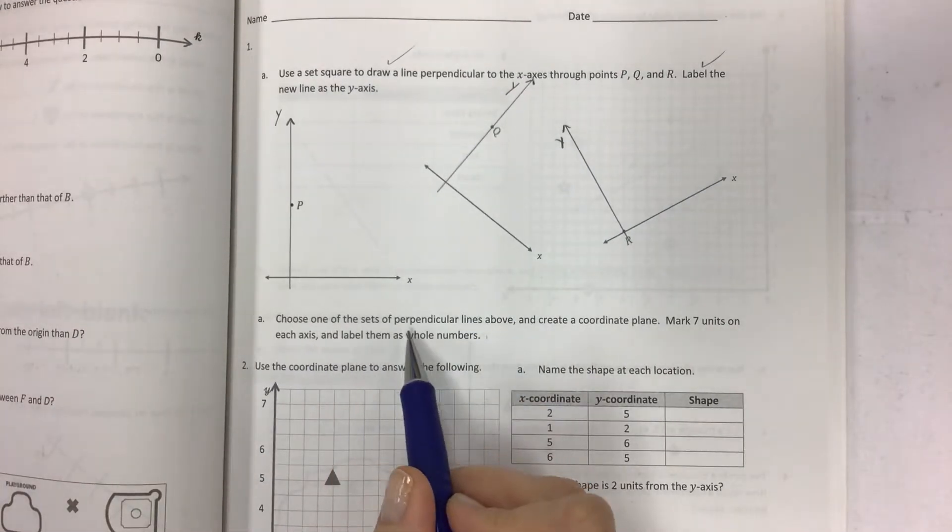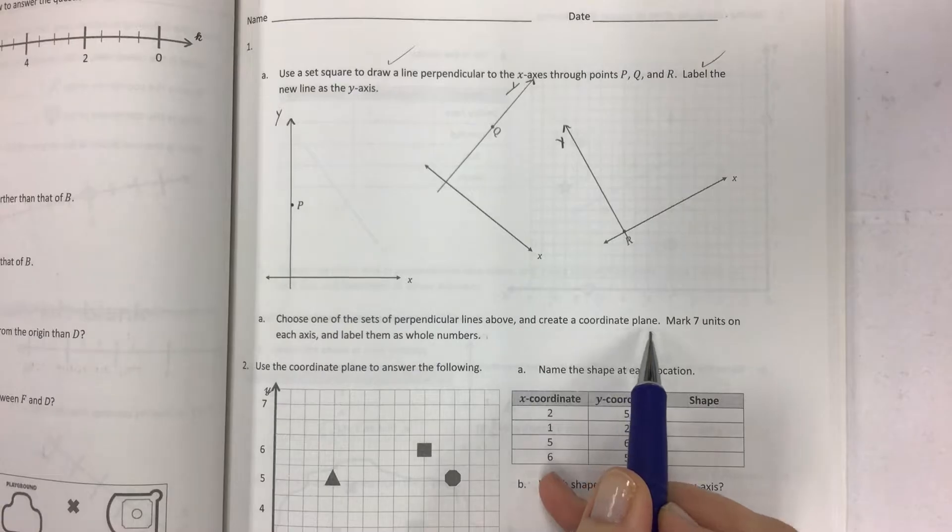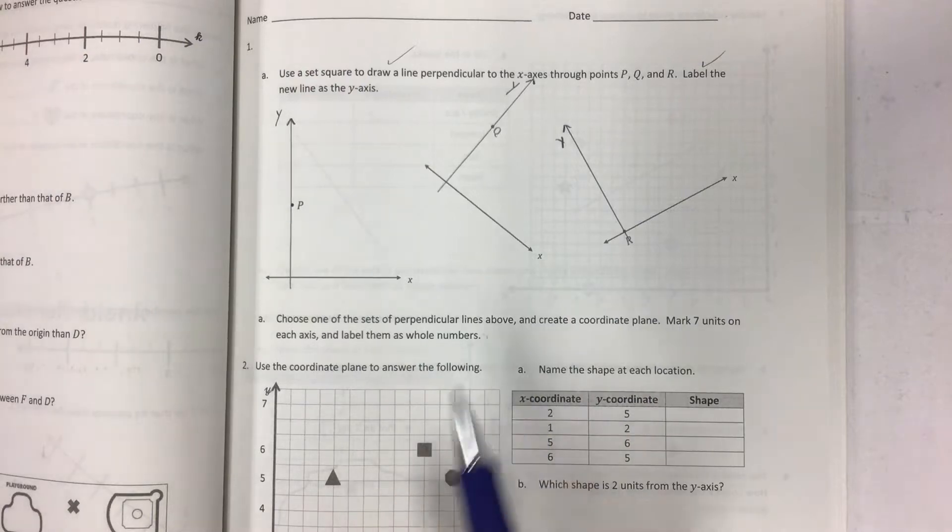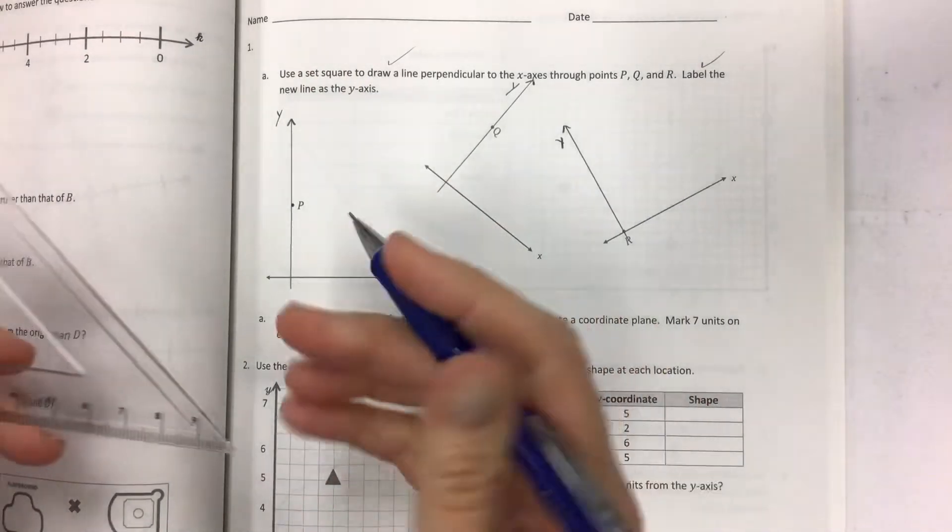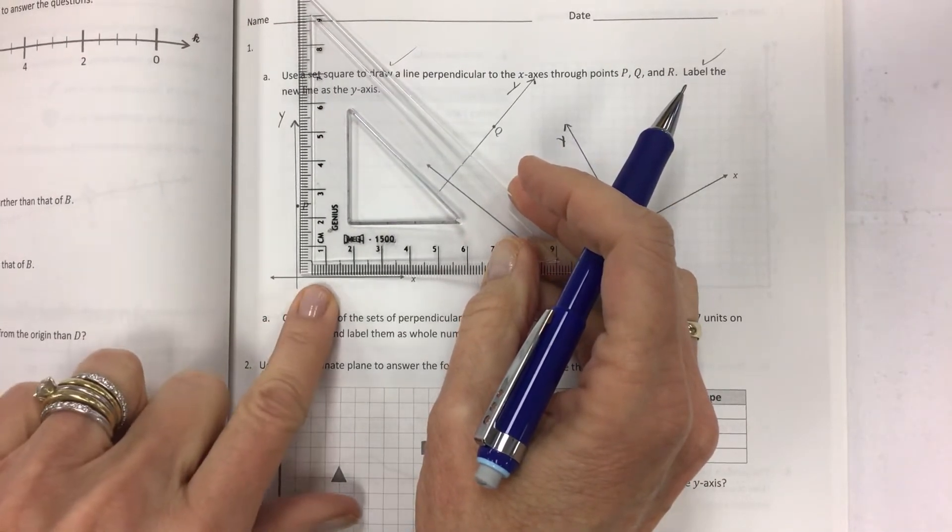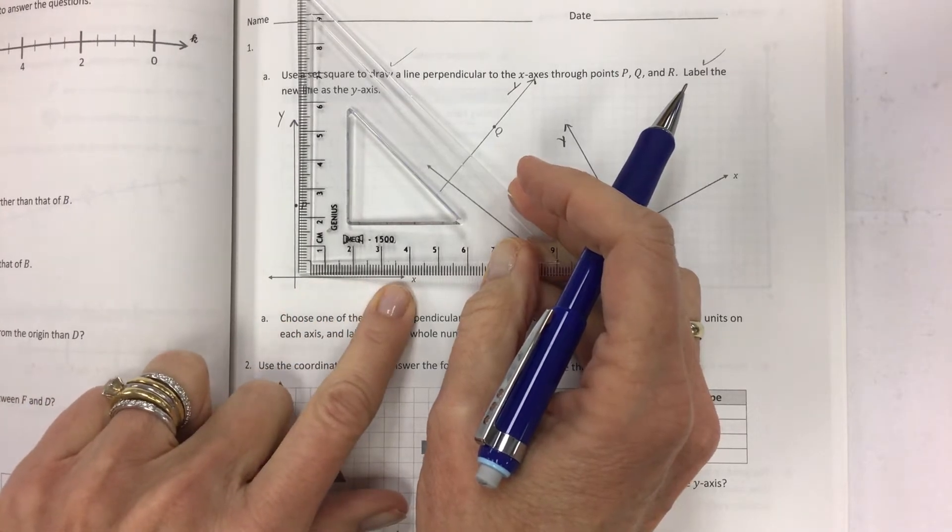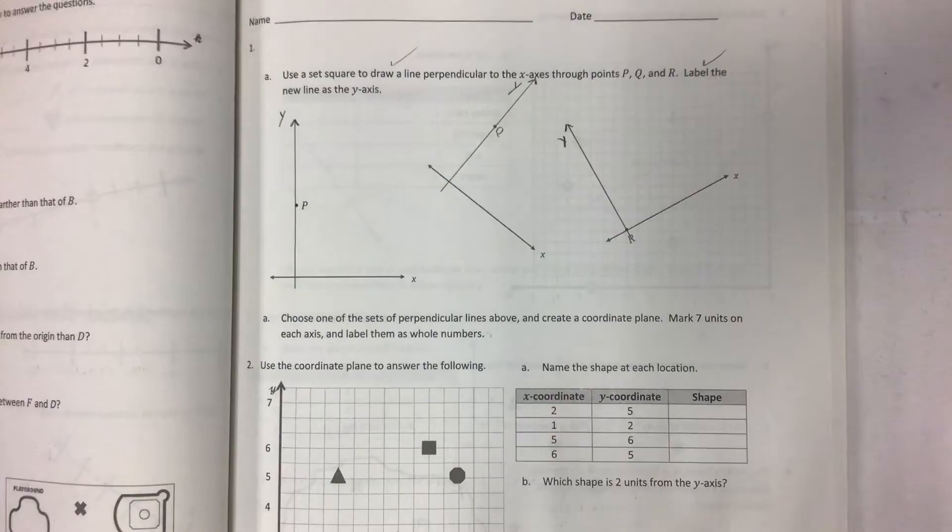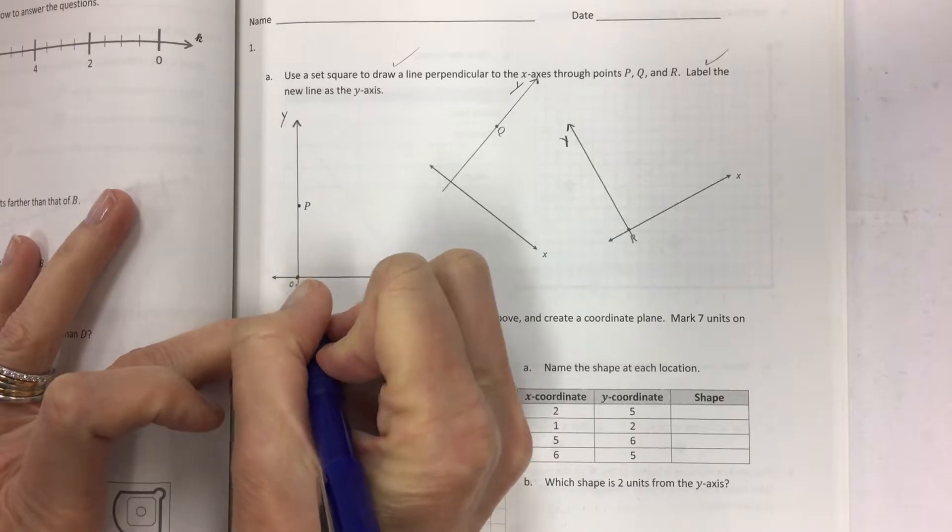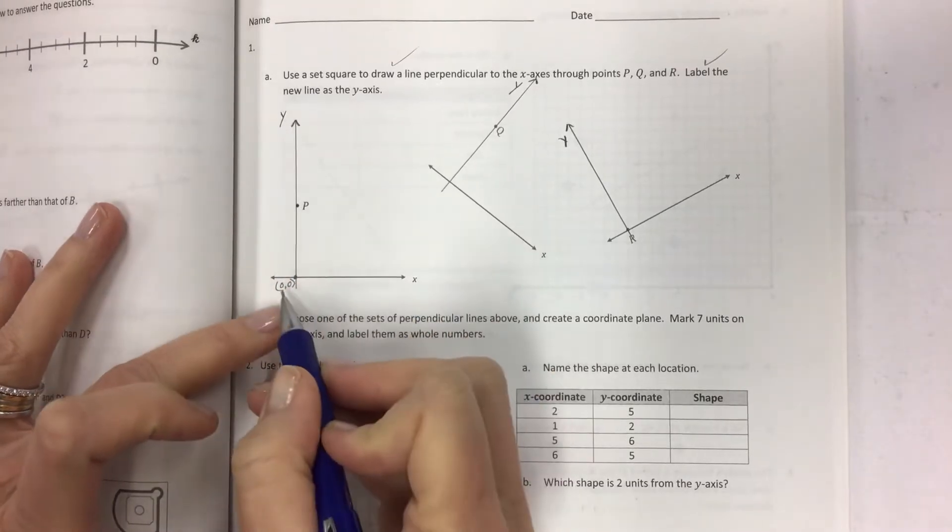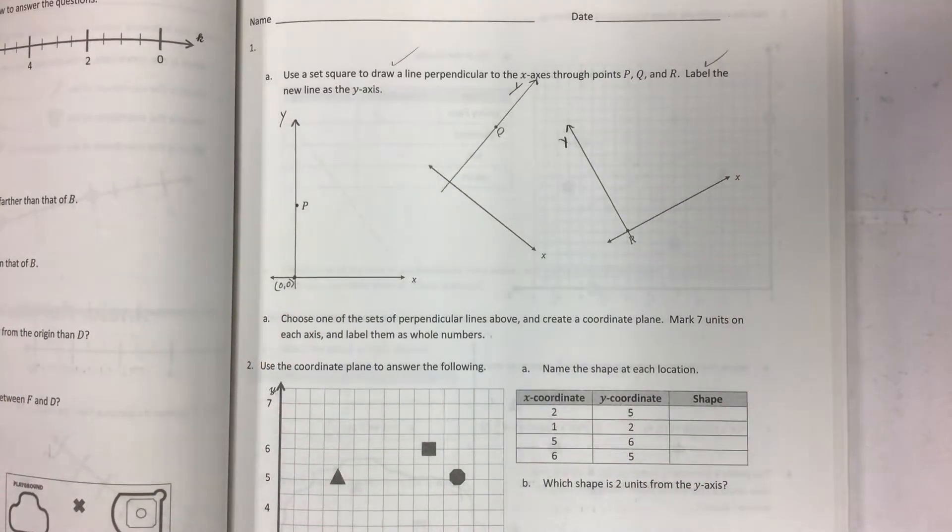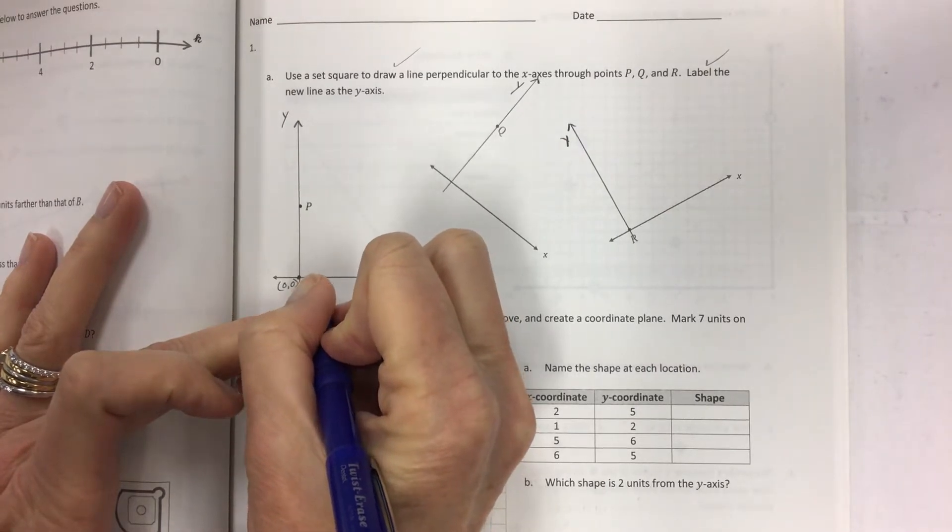So we drew it and we labeled it. Now choose one of the sets of perpendicular lines above and create a coordinate plane. Mark seven units on each axis and label them as whole numbers. So what you want to do is you can use a tool if you'd like, but you don't have to use exactly these millimeters or centimeters because these lines are kind of short. So you don't even have to use a tool at all. But what you do have to have is your zero point. So this is going to be, I'll back it up, my zero zero, that's the origin. And we have to have seven and they have to be equal amounts.